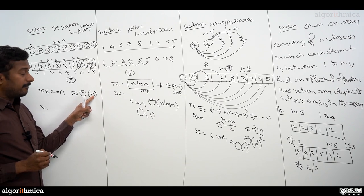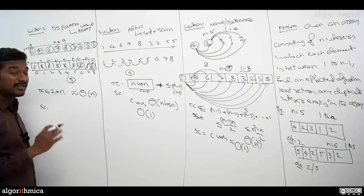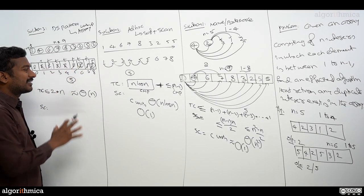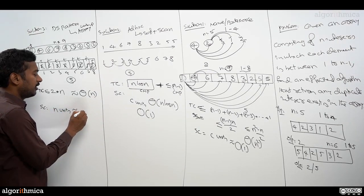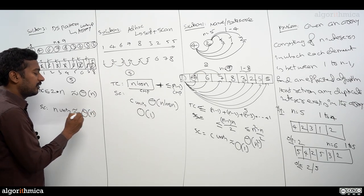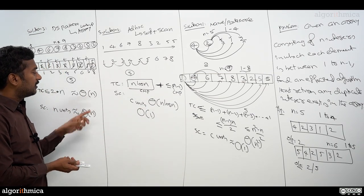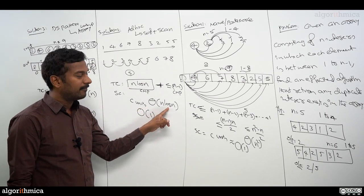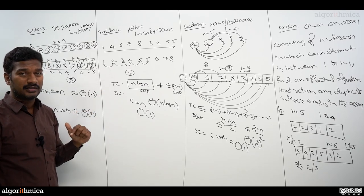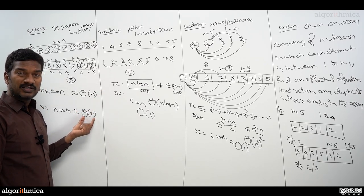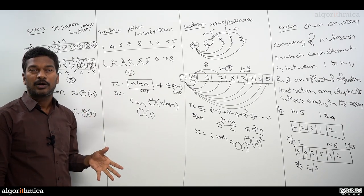So Θ(n) is the time complexity of this specific solution. For space, we must afford an extra array of size n, so space complexity is also Θ(n). Comparing with the other two ideas — n·log n and n·n — theoretically this Θ(n) time is a far better solution, even compared to algorithm two. The only concern is the space.